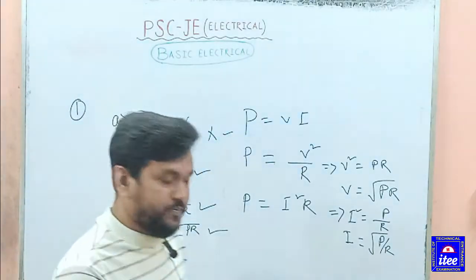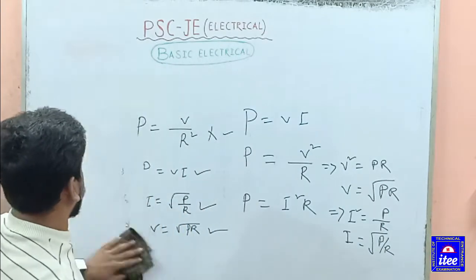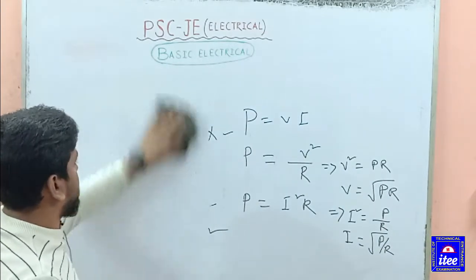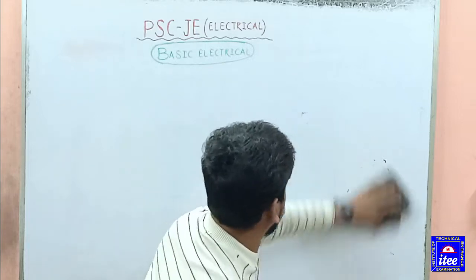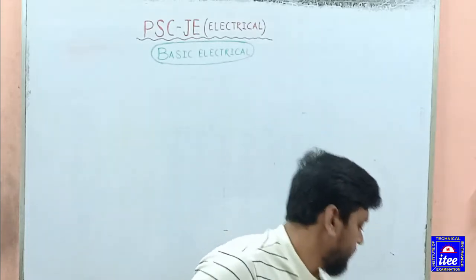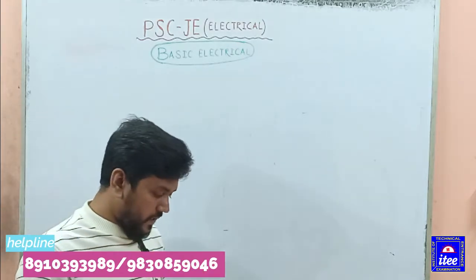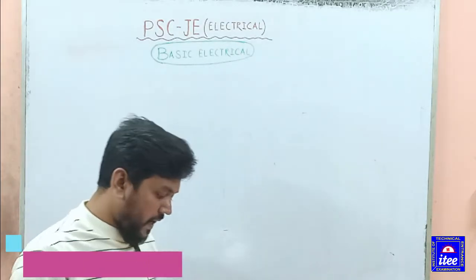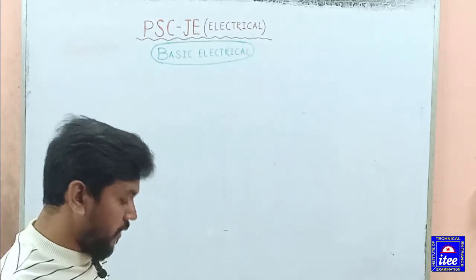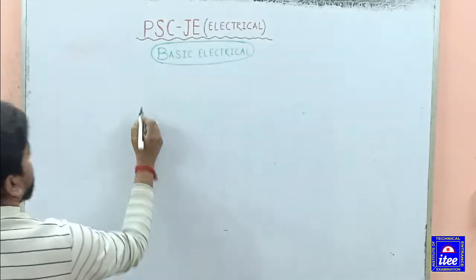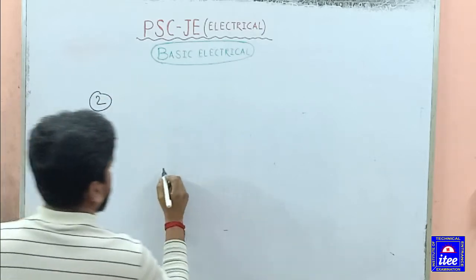Next question. The resistance, each of R0, are connected to form a triangle. The resistance between any two terminals will be. So question number two.